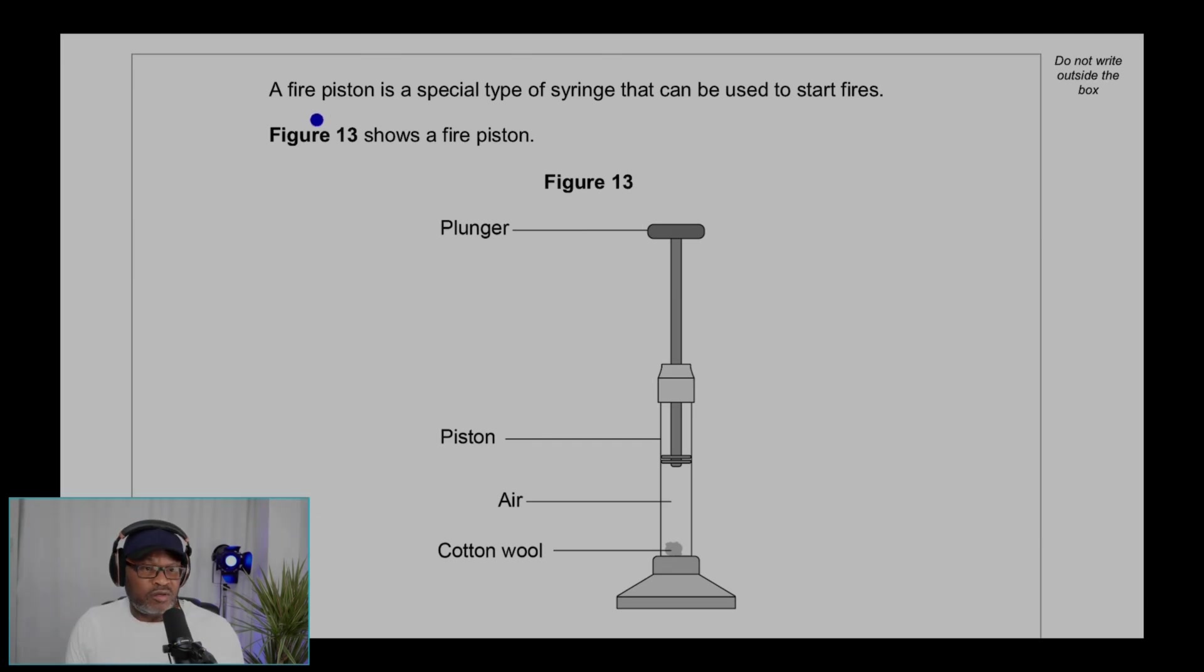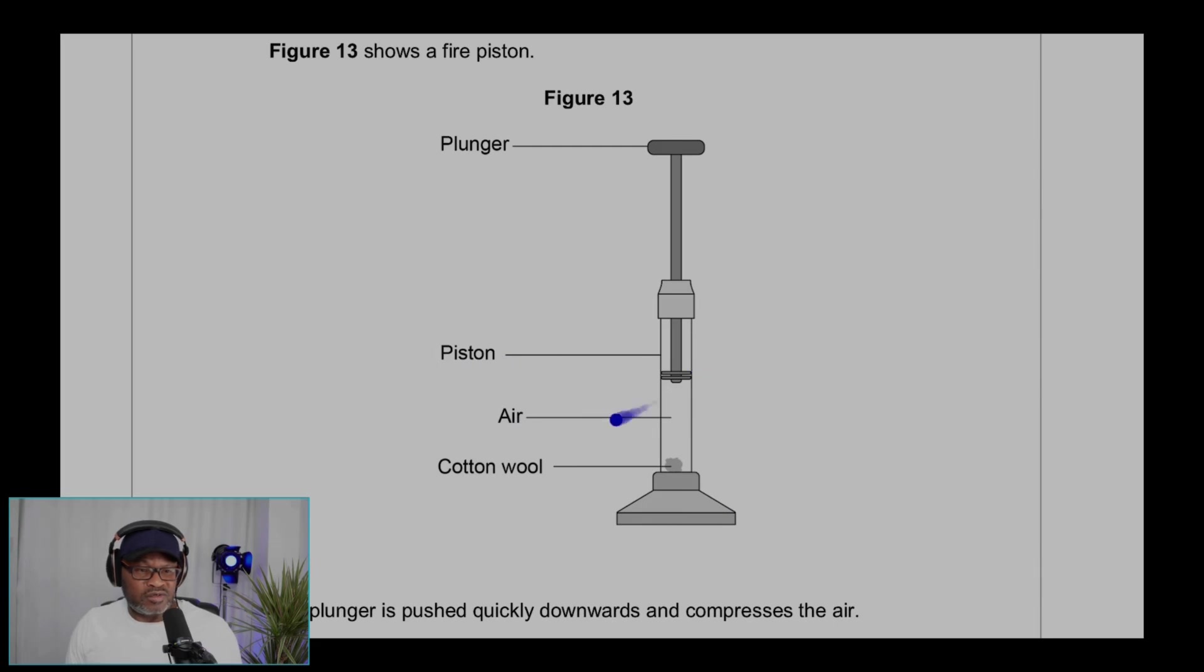Question 8.2. A fire piston is a special type of syringe that can be used to start fires. Figure 13 shows a fire piston. You've got the plunger, you've got the piston here, you've got the air and cotton wool there.